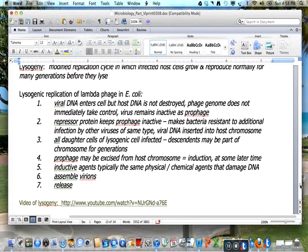The phage genome does not immediately take control and the virus remains inactive as a prophage. A repressor protein keeps the prophage inactive and makes the bacteria resistant to additional infection by other viruses of the same type.